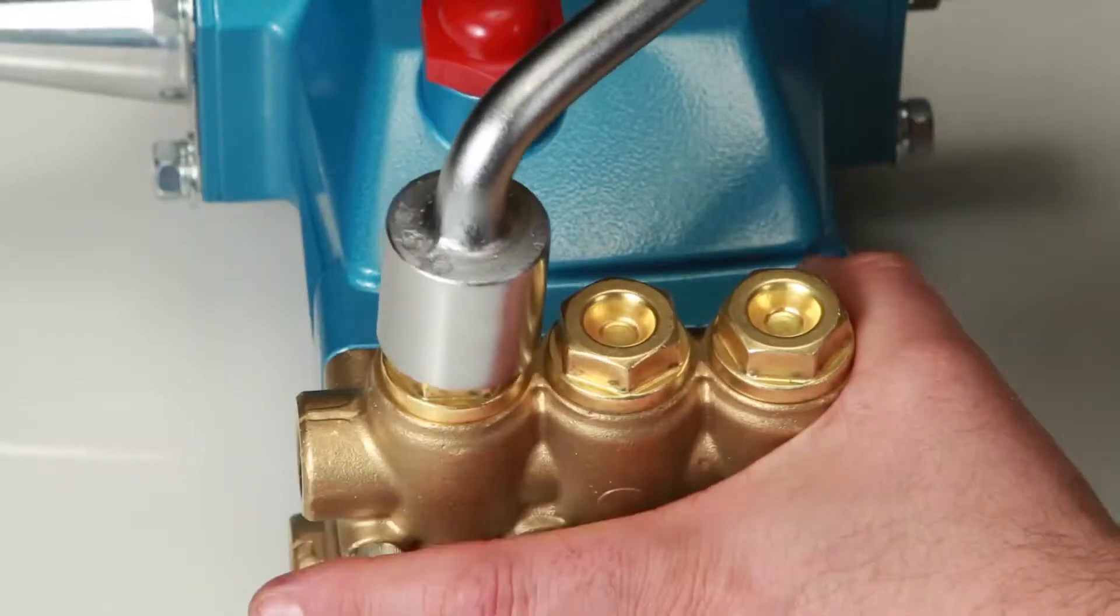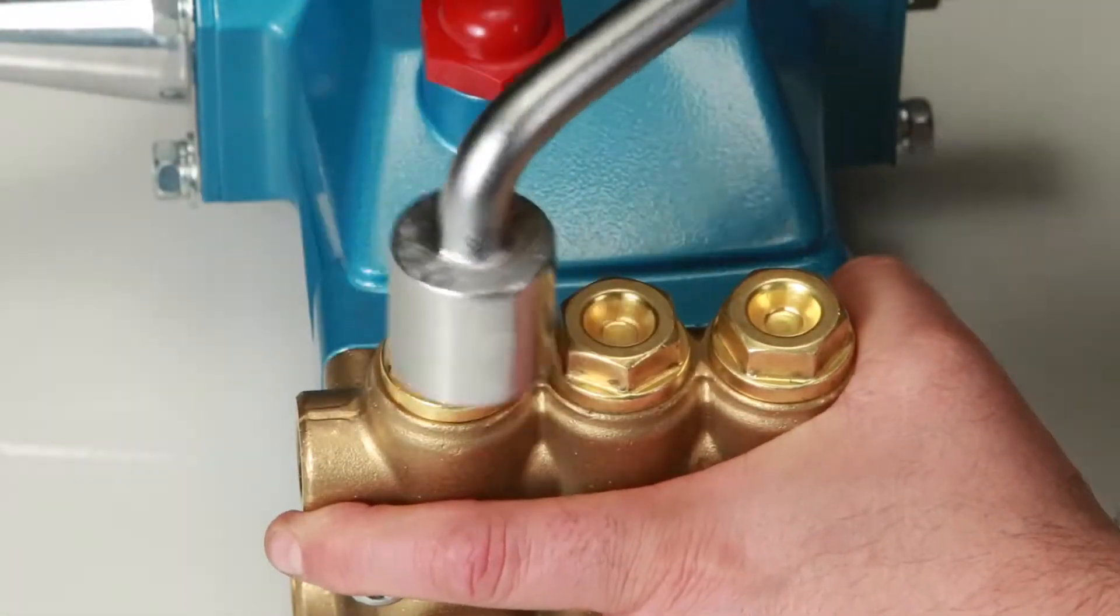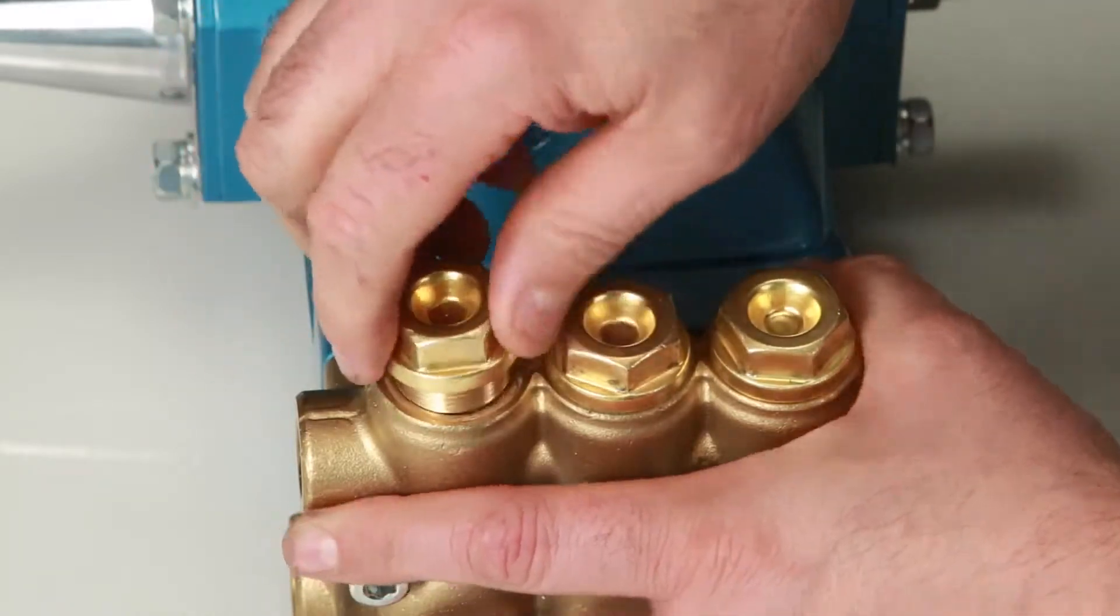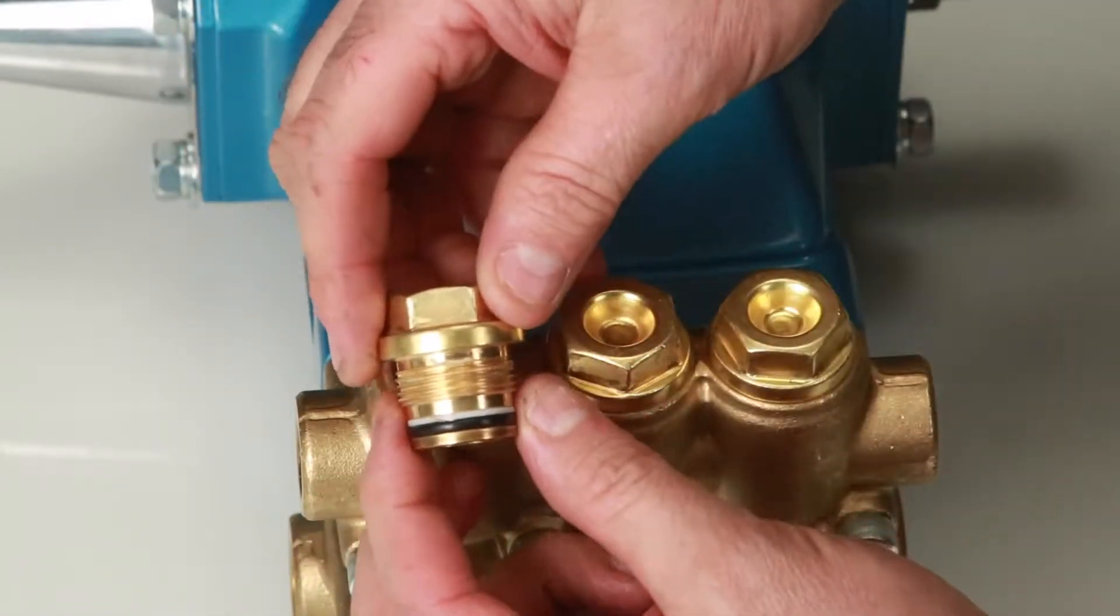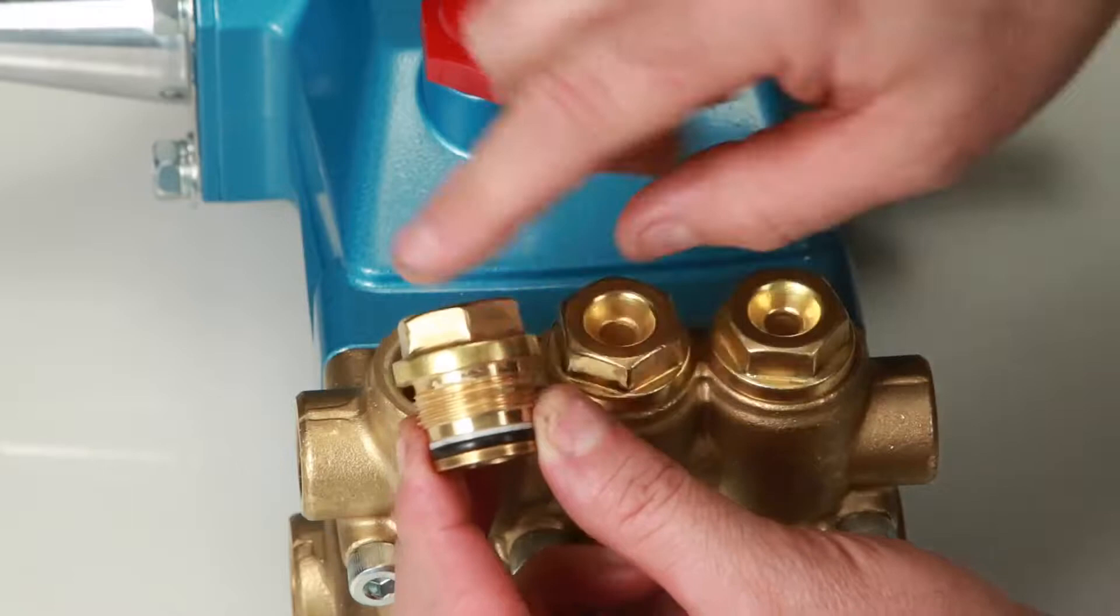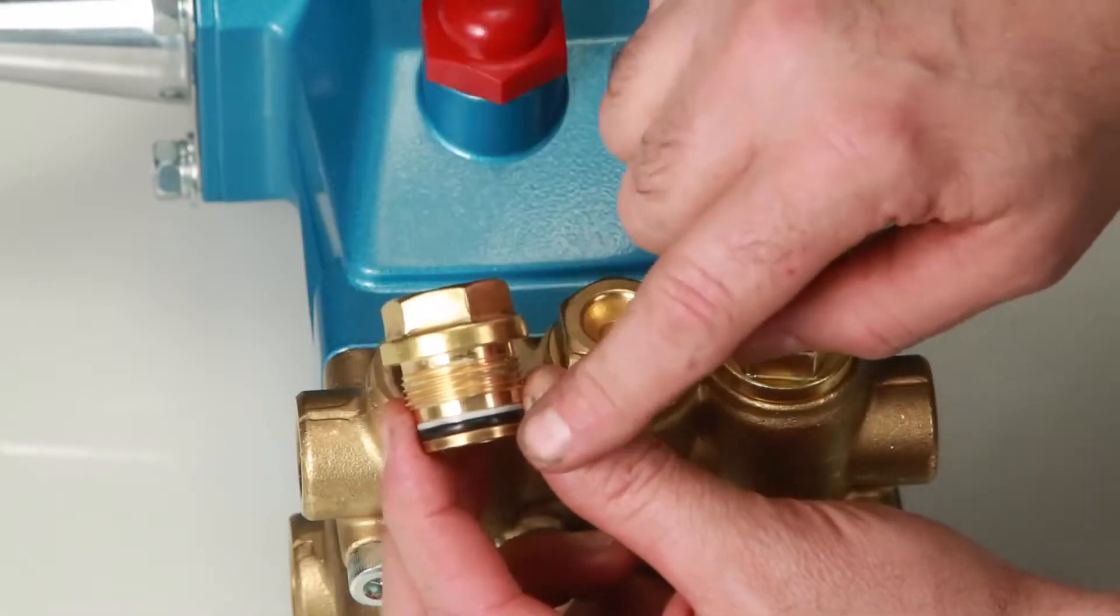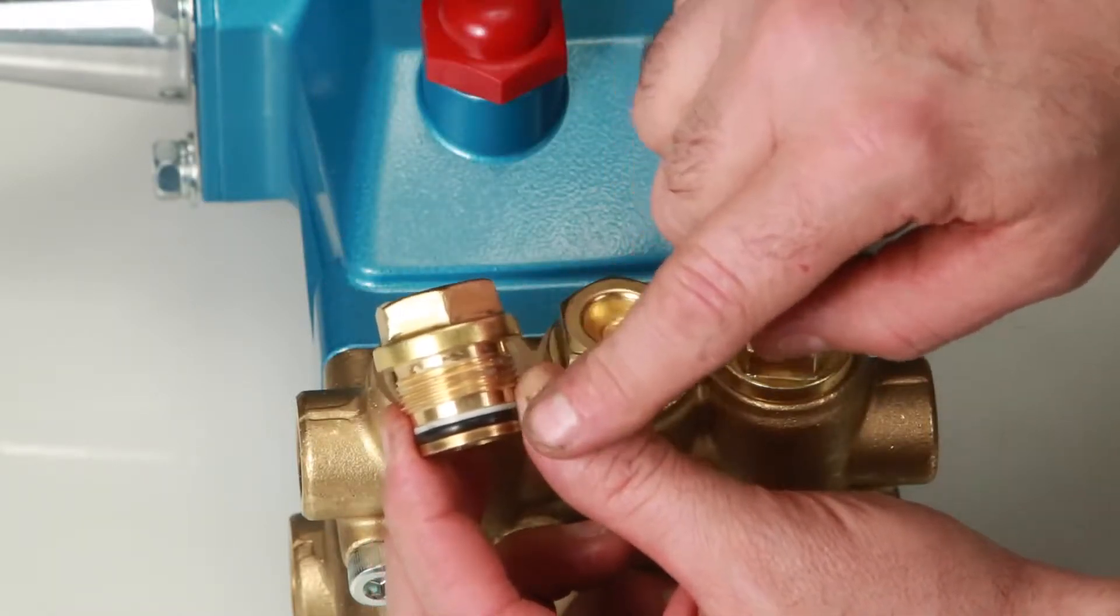To begin servicing the valves, remove the valve plugs using a 24mm hex wrench. After removing the valve plugs, be sure to inspect the O-ring and backup ring for any damage, or replace with new parts included in a valve kit.